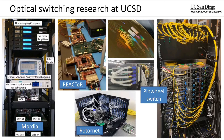Our research group at UCSD focuses on optical switching for data center networking applications. Over the past few years, our group has developed a number of experimental networks that utilize a variety of optical switching technologies. We build these systems at a sufficient scale to provide robust measurement results. To facilitate this, we need to use as much commercial hardware as possible. However, commercial hardware is generally not designed with optical switching in mind. As a result, we run into roadblocks occasionally.